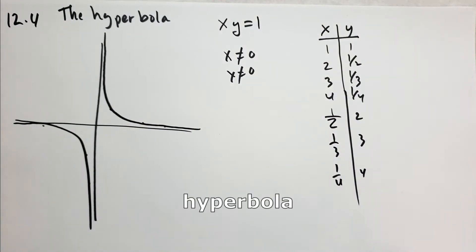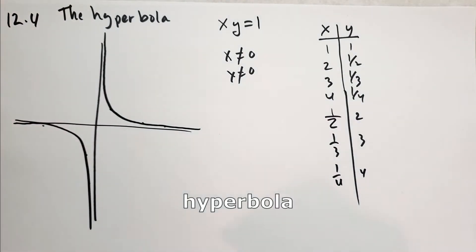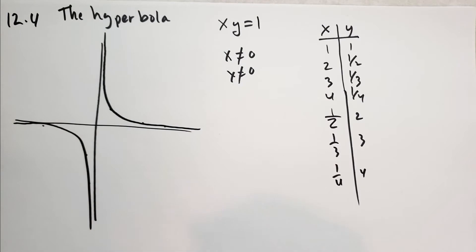So that is basically what a hyperbola looks like. Never intersects the coordinate axes. It just kind of gets closer and closer to it over the distances.